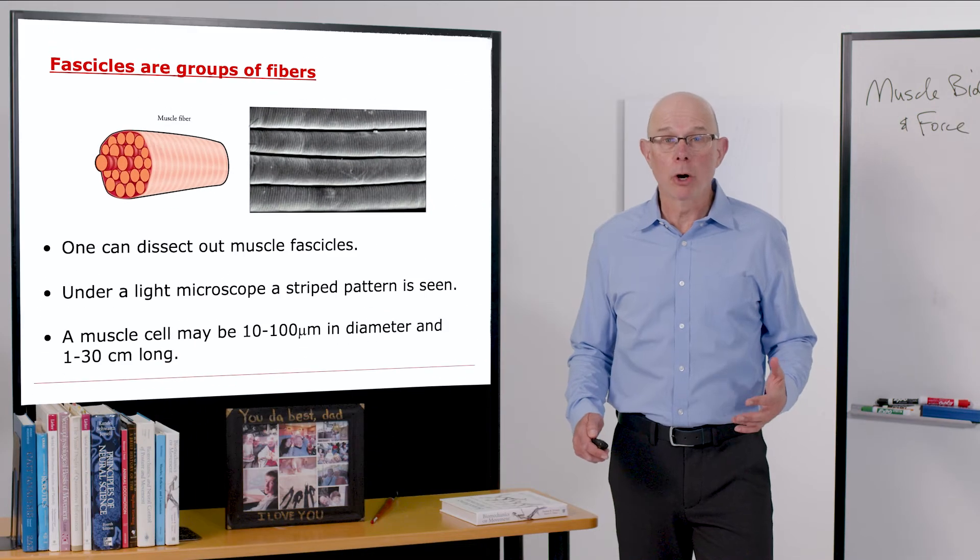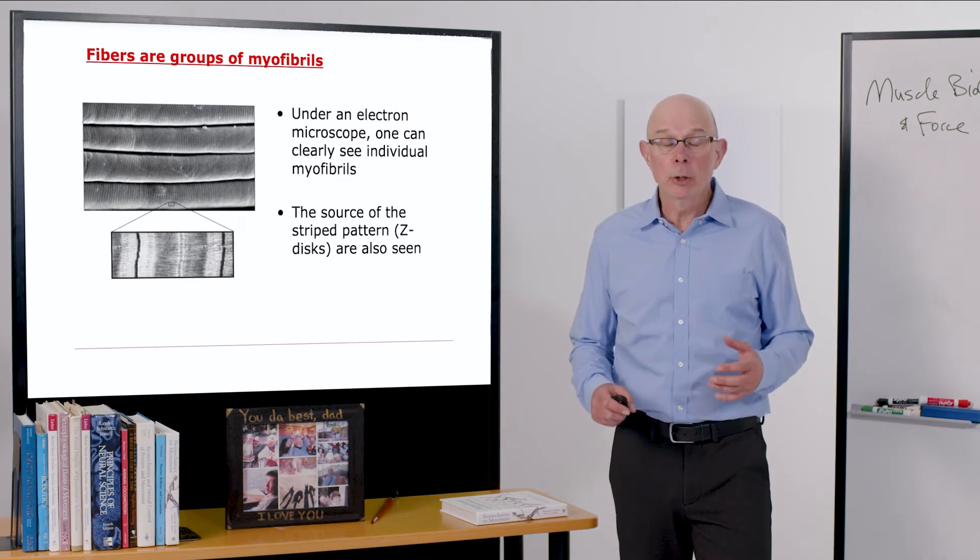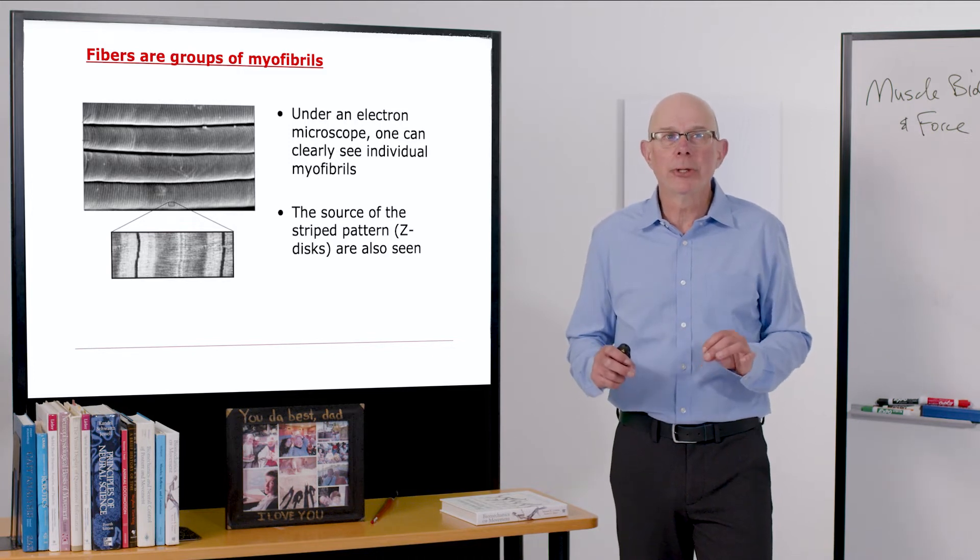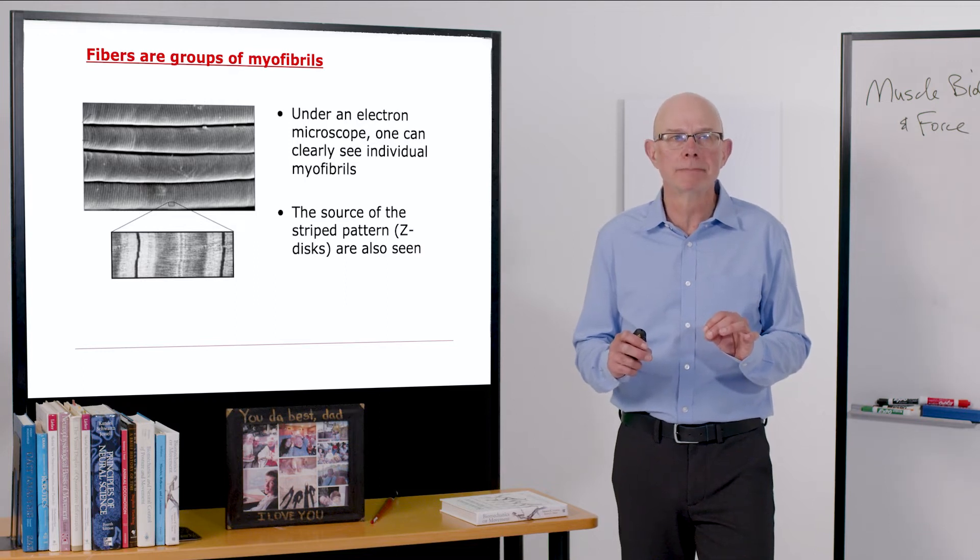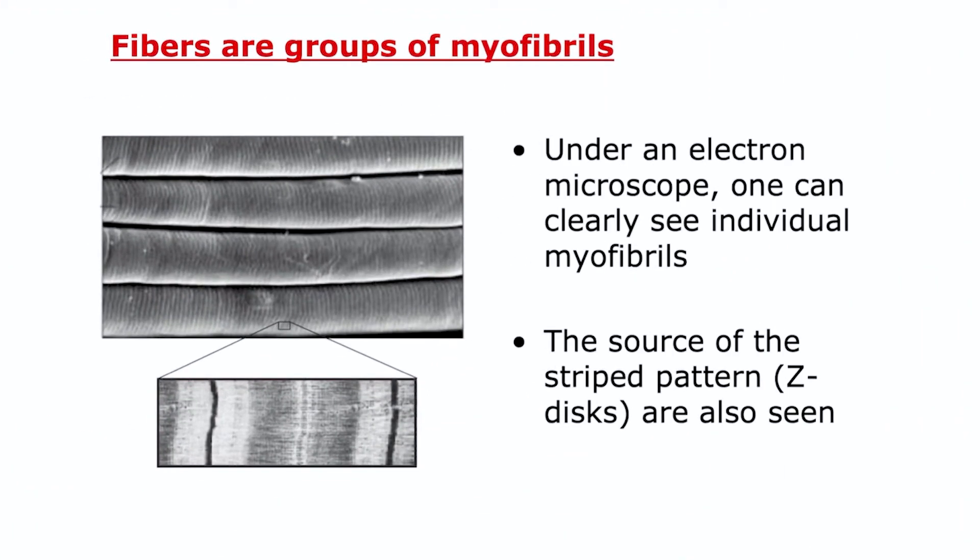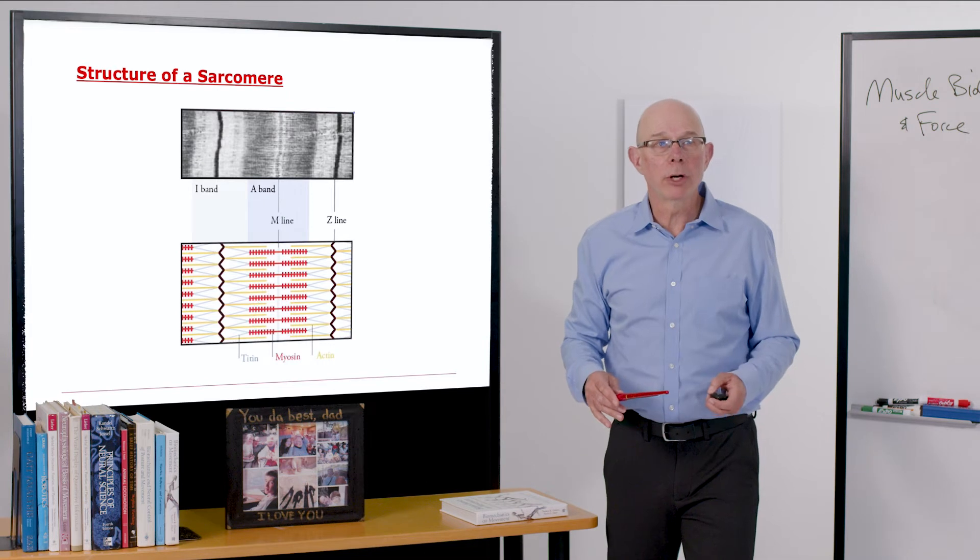Muscle fibers are muscle cells. And those fibers are groups of myofibrils. Literally, myofibrils are muscle threads. And under an electron microscope, you can clearly see these individual myofibrils. The source of the striped pattern are the Z-discs that you can see right here. So there are the Z-lines here, another Z-line here. And under a microscope, those show up and those give muscle its striped pattern.